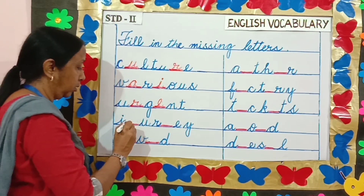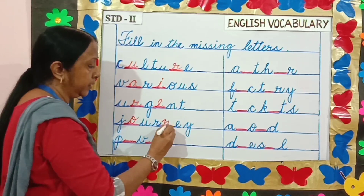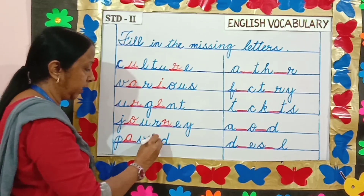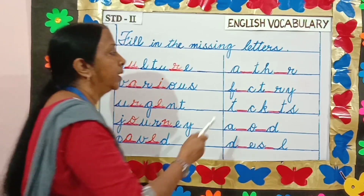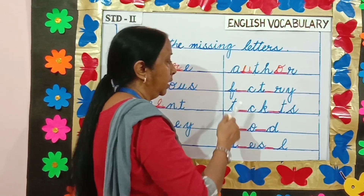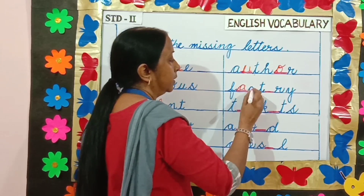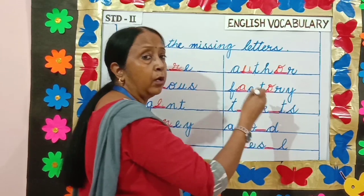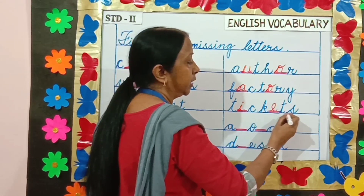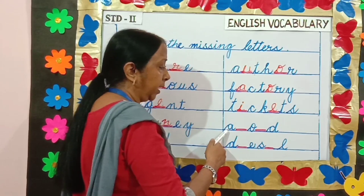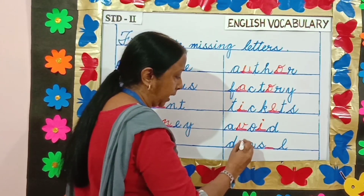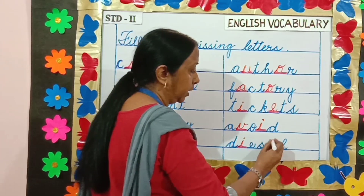J-O-U-R-N-E-Y — journey. P-A-V-E-D — paved. A-U-T-H-O-R — author. F-A-C-T-O-R-Y — factory. T-I-C-K-E-T-S — tickets. A-V-O-I-D — avoid. D-I-E-S-E-L — diesel.